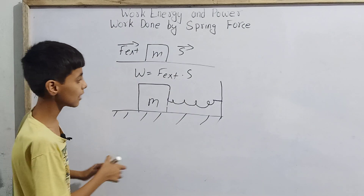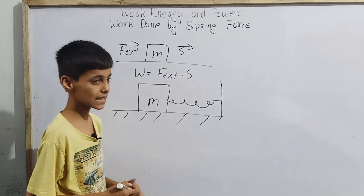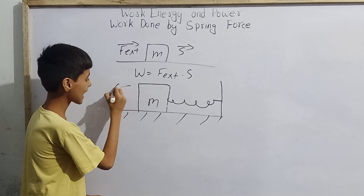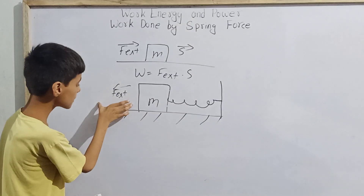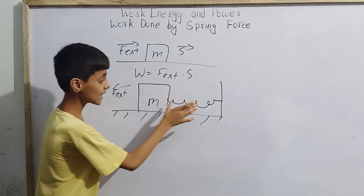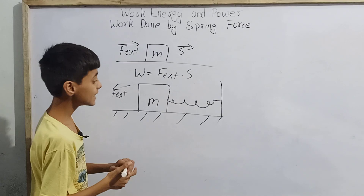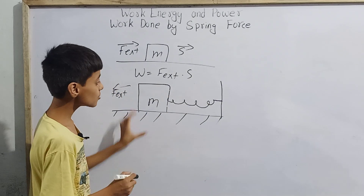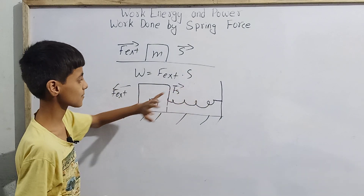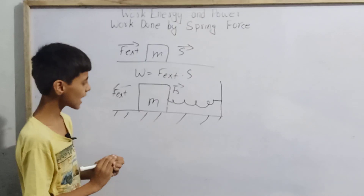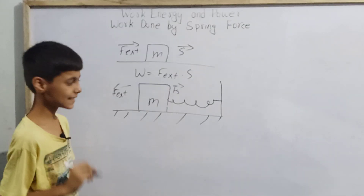Now, what force will be applied by the spring on the block of mass m, and what will be the displacement due to that force? Imagine we apply an external force F_external, trying to stretch the spring larger. We bring the block out to some position, then release it. The spring will then compress back and exert a spring force F_s on the block, causing a displacement. We need to find the work done by this spring force.